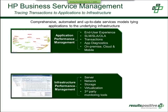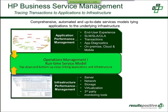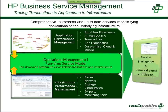Looking from the bottom up, infrastructure performance management gathers event streams and performance metrics for servers, network, storage, virtualization, ESX, vCenter, and third-party monitoring tools. The secret sauce is putting these two together using the runtime service model, which creates the manager of managers — what we call Operations Manager I, or OMi. This is a top-down, bottom-up view linking applications to infrastructure. Once we have this environment built, we can leverage universal event correlation and Service Intelligence.